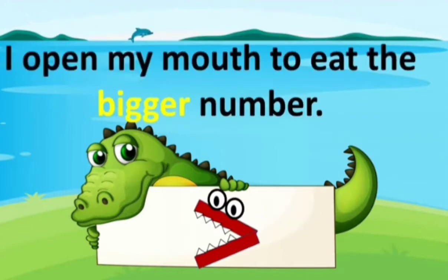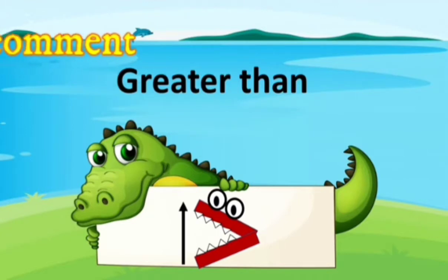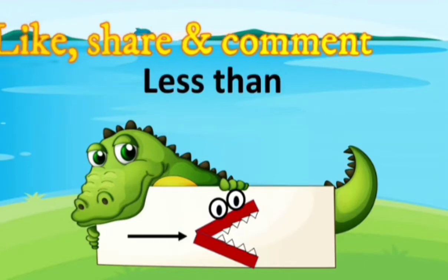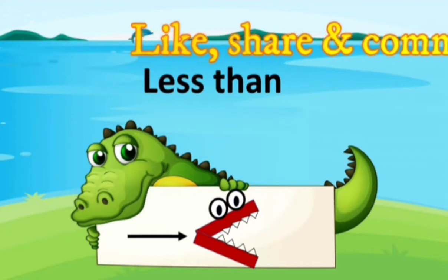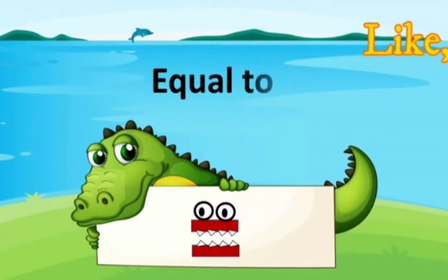Very easy. Alligator is saying: I open my mouth to eat the bigger number. So when does the alligator open its mouth? Whichever side is a bigger number. See which side the mouth is open — this is greater than. That side is always a bigger number. And the opposite side, where the mouth is closed, that is always the less number.